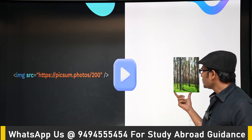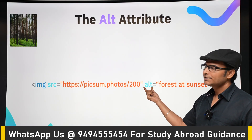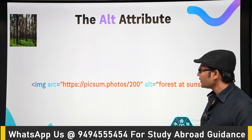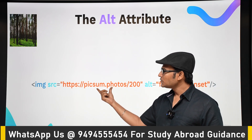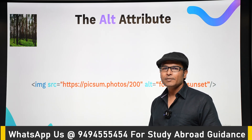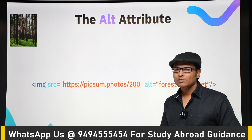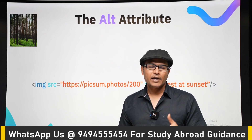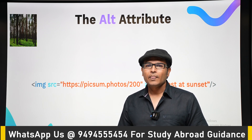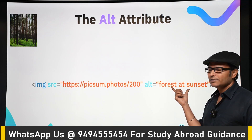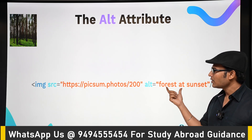There is also an attribute called 'alt', which stands for alternative text description. Whenever the image is not loaded — for example, if there is a problem with the URL — this text will be displayed instead. Also, blind people using screen readers rely on this alternative text, which is read out to them. Those are the two main cases where 'alt' is helpful.